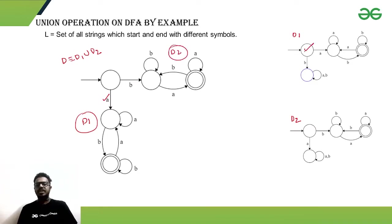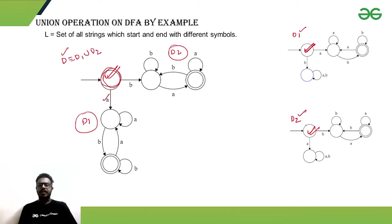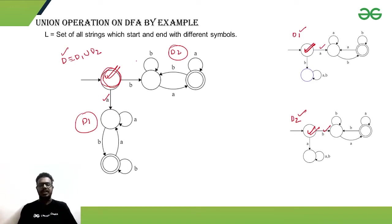The initial state of D1 and the initial state of D2 are merged into the single initial state of D. The dead states are removed since they are not necessary. If the string receives A we go to the D1 part, and if it receives B we go to the D2 part. That is how the union operation works on DFA.